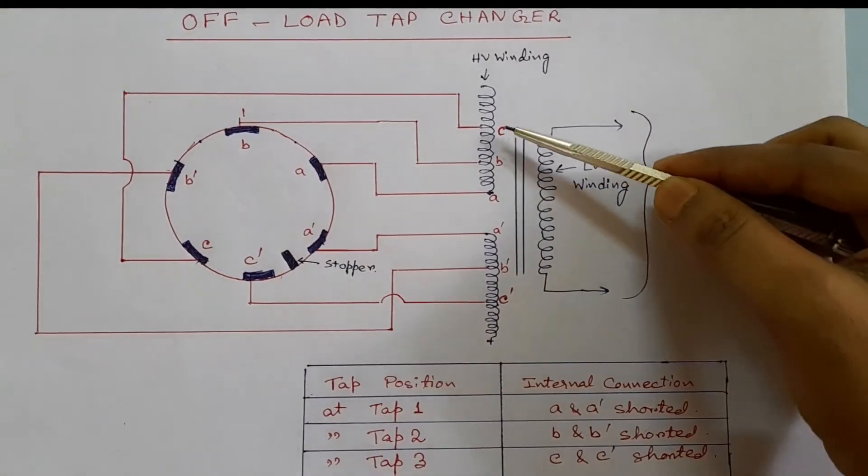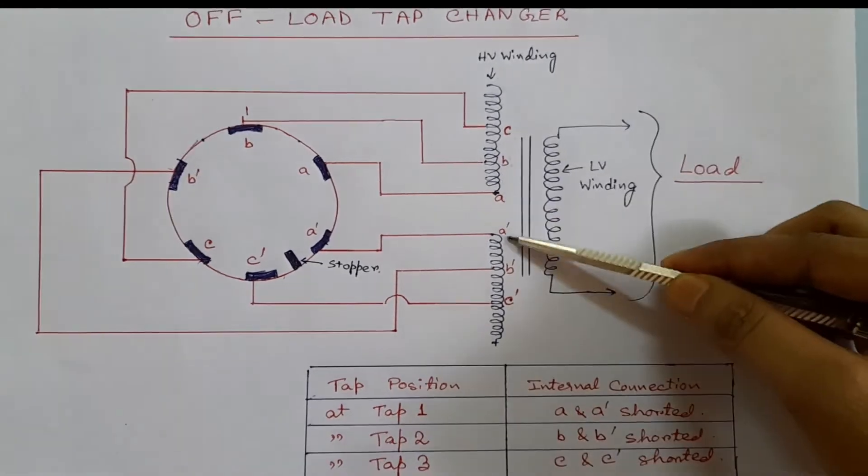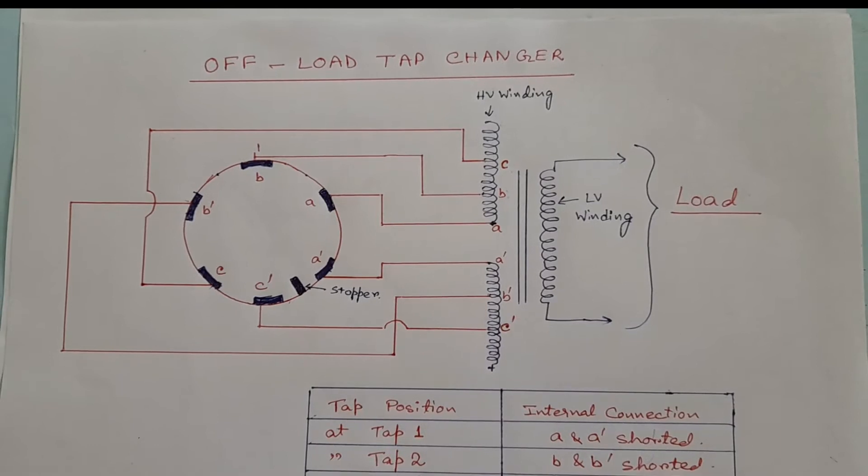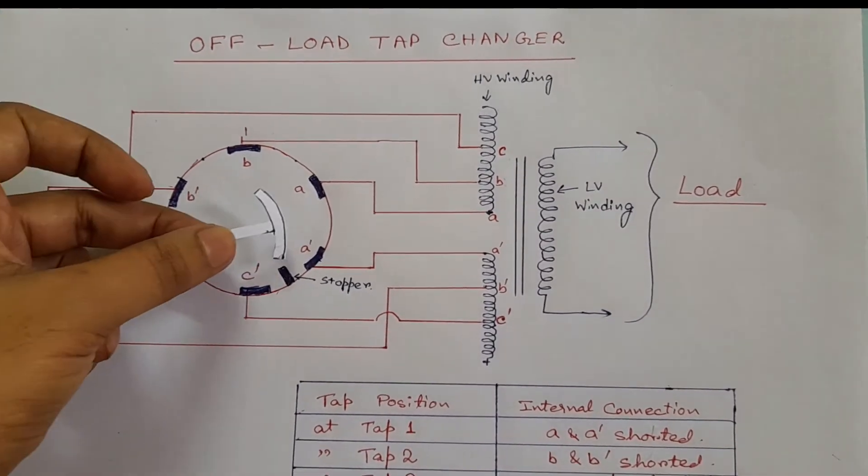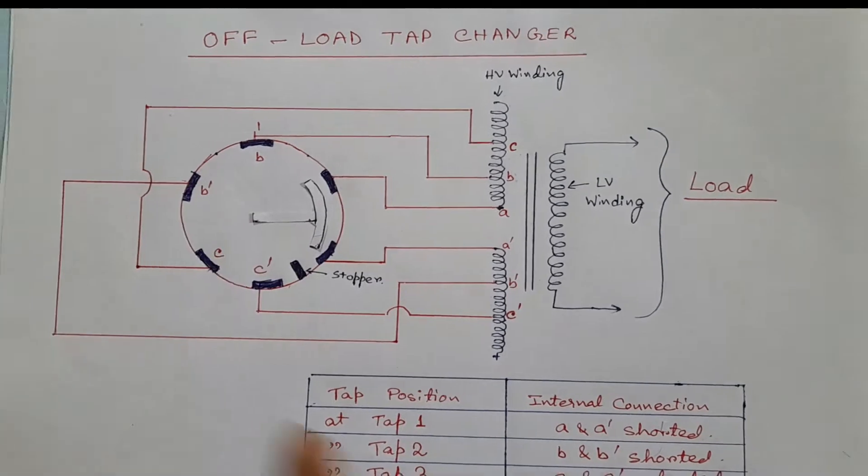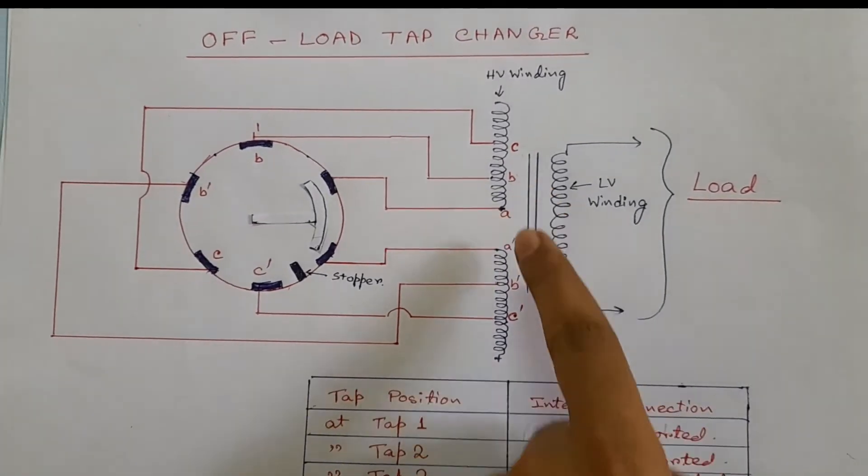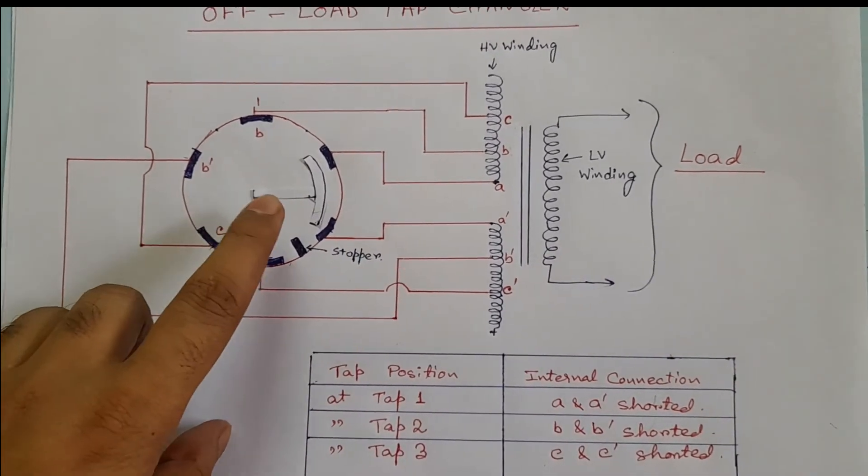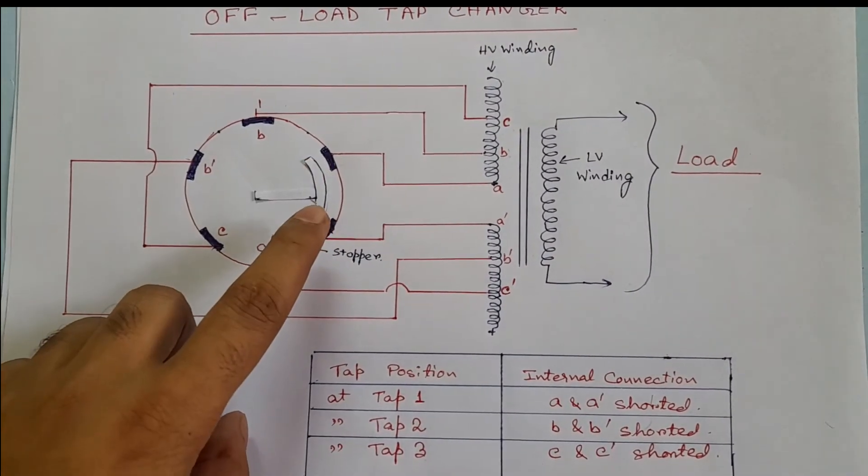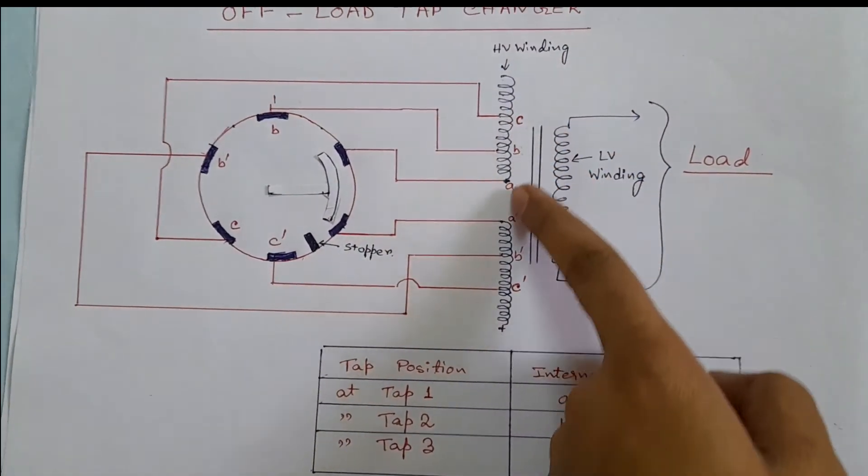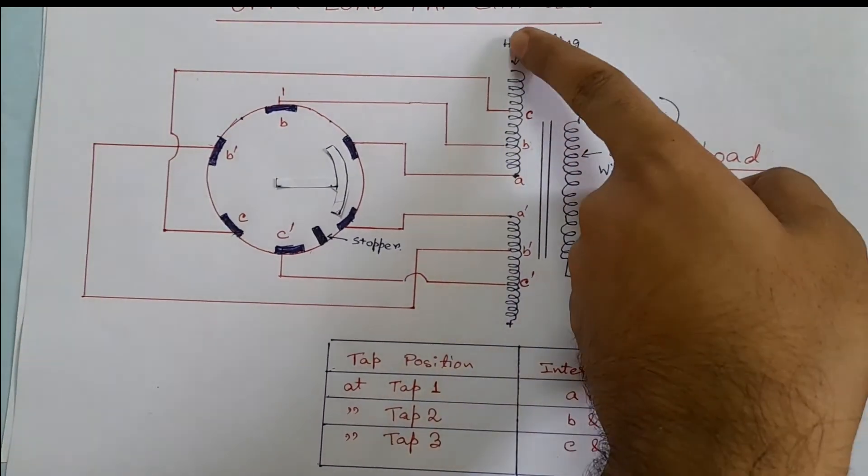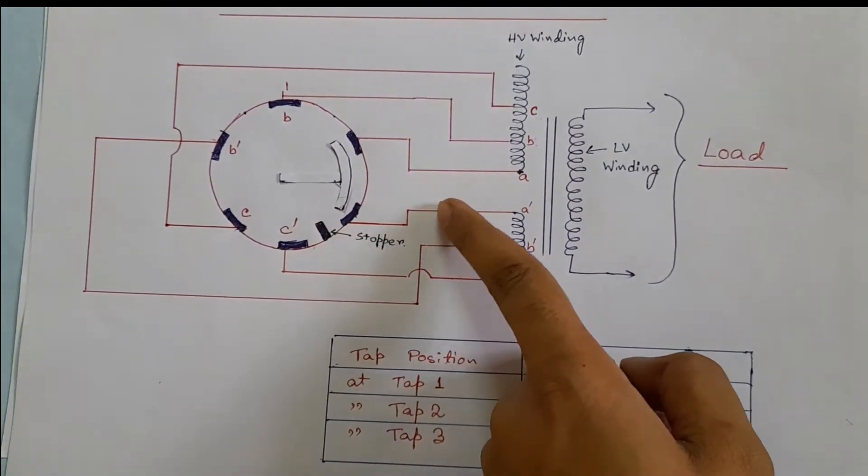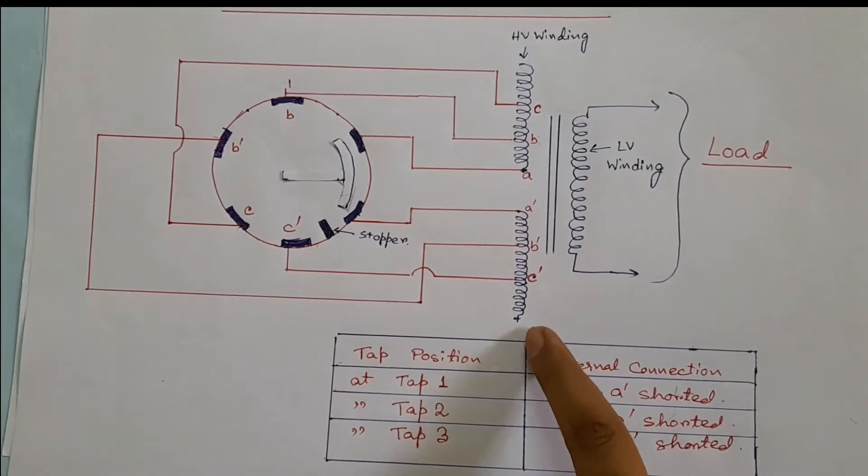As a result, there is no connectivity between the upper and lower side of the high voltage winding. But using a rotatable arm like this, we can easily establish connection between the upper and lower winding. At tap position one, this rotary switch is placed in this condition and the upper and lower windings are now connected. HV current will flow in this path. So this is a closed circuit and the connection is established.